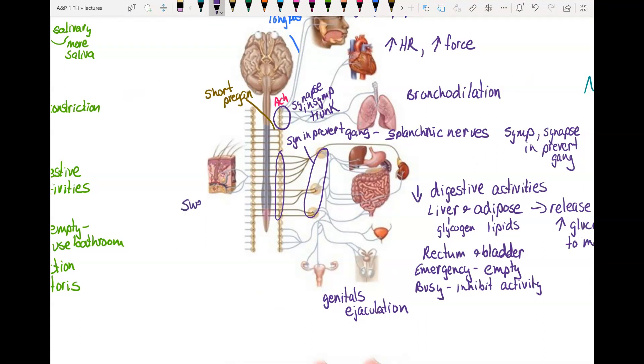Then we also have, on this side, sweat glands. So sympathetic is going to stimulate your sweat glands and it's going to make you sweat. You're going to make more sweat. And remember, this one uses acetylcholine.